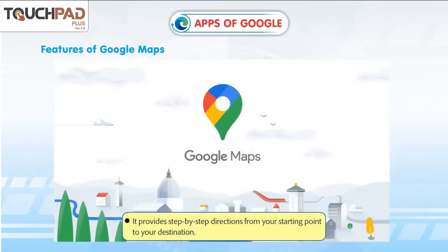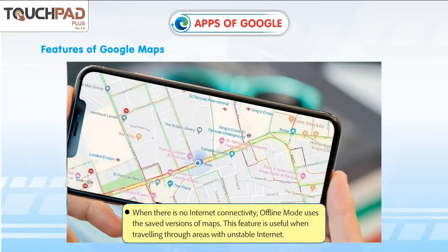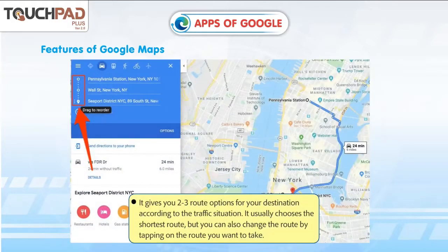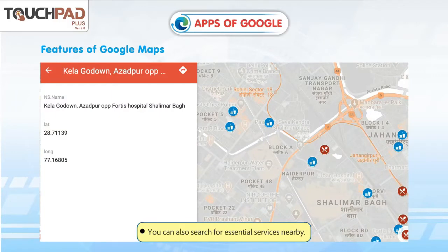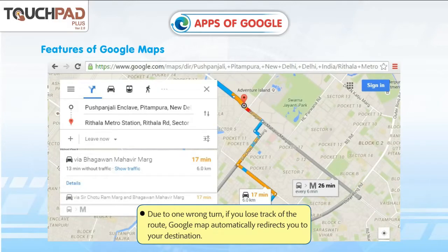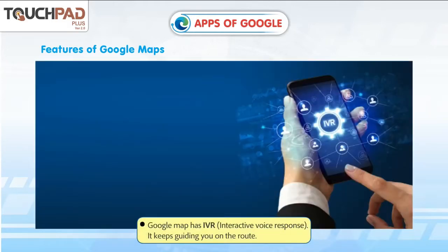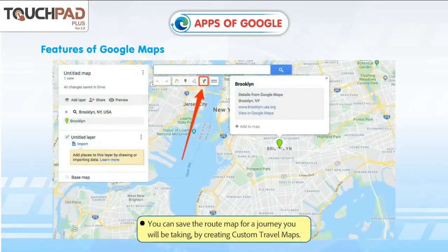Features of Google Maps. It provides step-by-step directions from your starting point to your destination. Offline mode uses the saved versions of maps when there is no internet connectivity, which is useful when traveling through areas with unstable internet. It gives you two to three route options according to the traffic situation and usually chooses the shortest route, but you can change the route by tapping on the route you want to take. If you need to meet someone, you can ask them to share their live location. You can also search for essential services nearby. If you lose track of the route due to a wrong turn, Google Maps automatically redirects you to your destination. Google Maps has IVR (Interactive Voice Response) that keeps guiding you on the route. You can save the route map for a journey by creating custom travel maps.